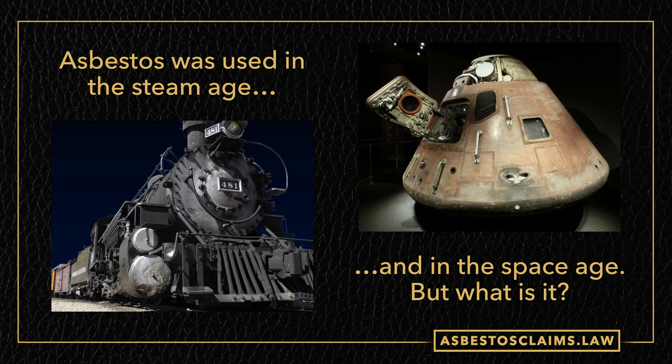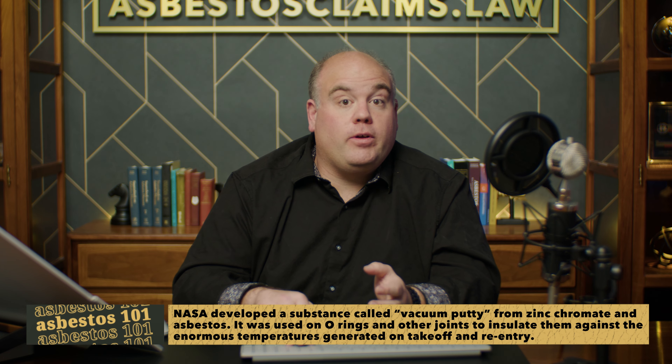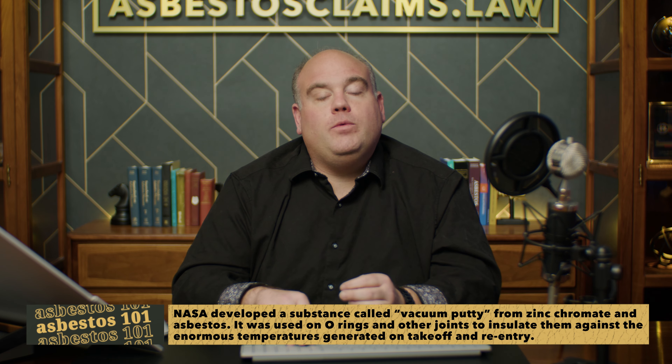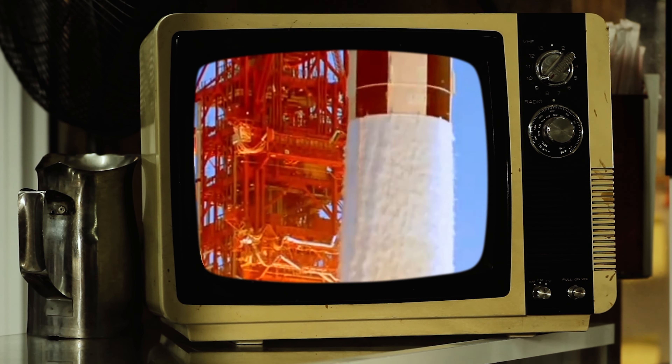A lot of people understand that asbestos is a fireproof mineral, but they don't know much more than that. So we're going to talk about how asbestos was used both in the steam age and in the space age. If you could crack the bolts open on that locomotive to your left, you would find that it is a giant boiler insulated heavily with asbestos. And if you were to go to either the Mercury or the Apollo space capsules, including the one we left on the moon, you'd find portions of it were insulated with asbestos as well.